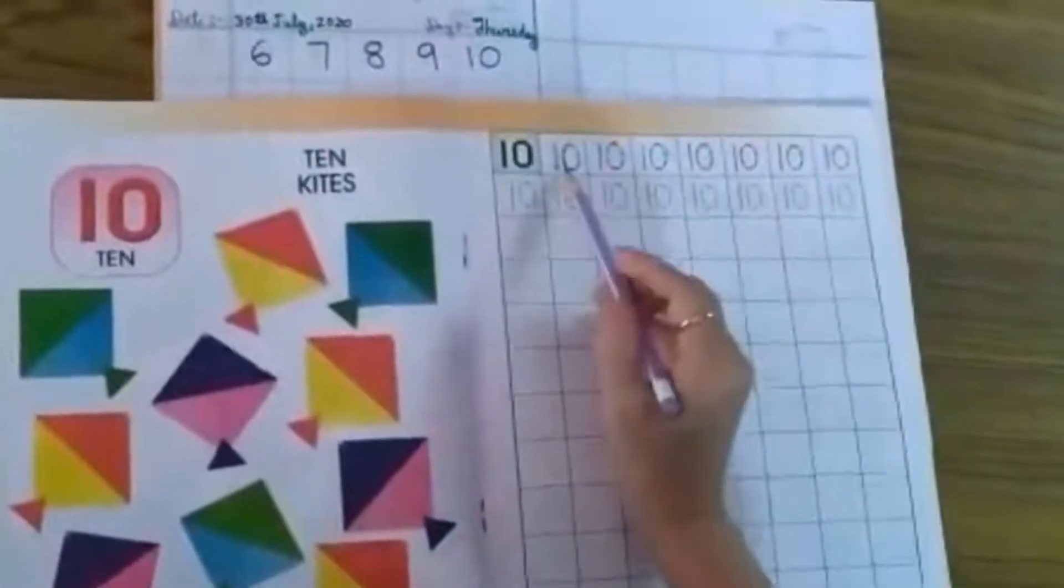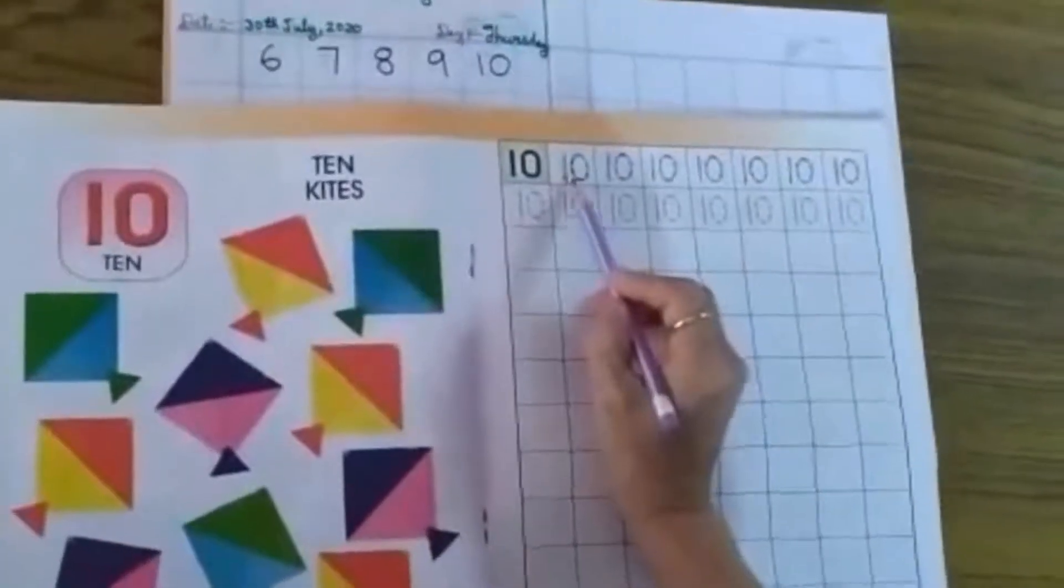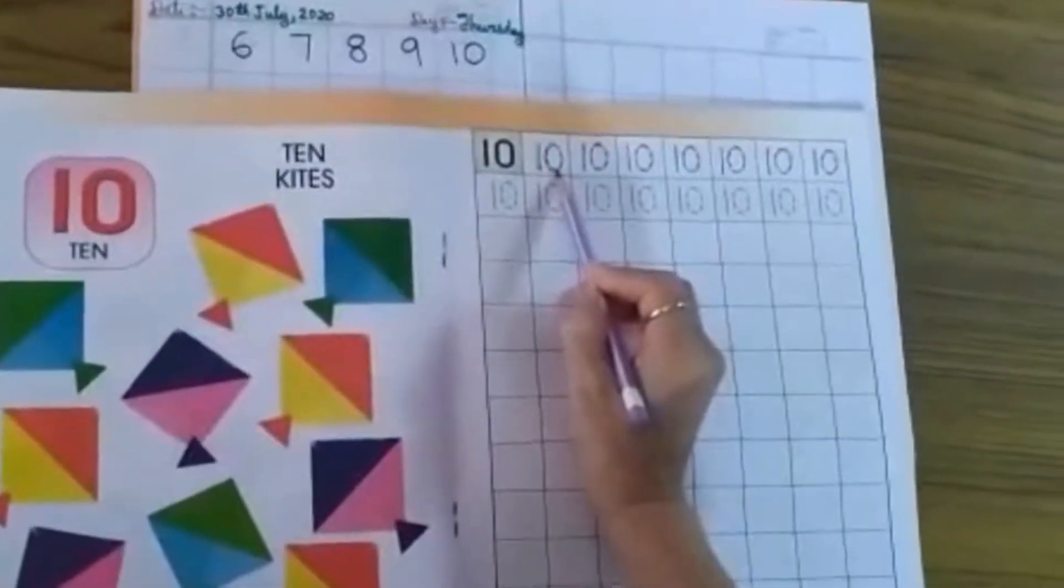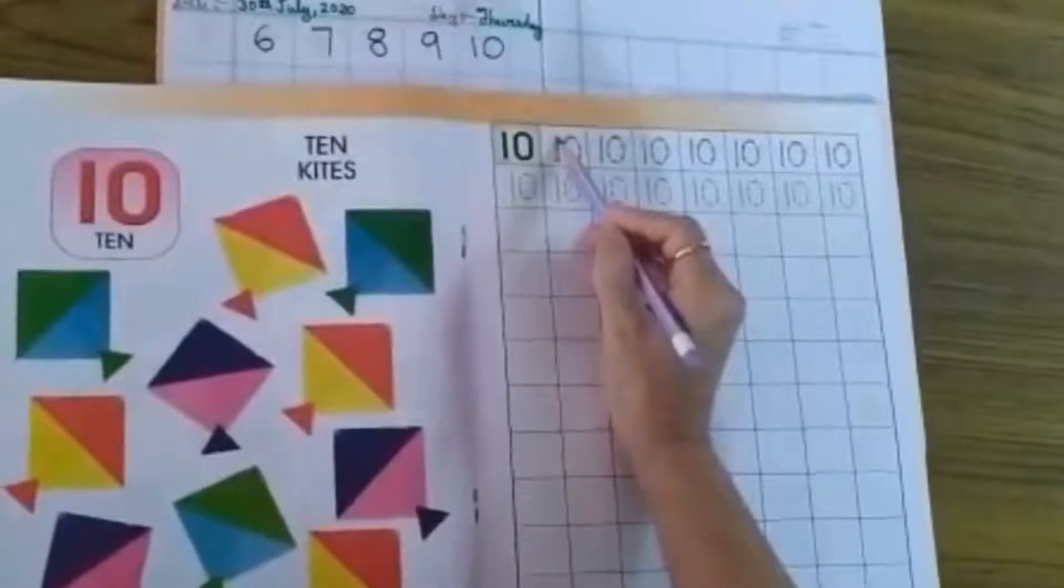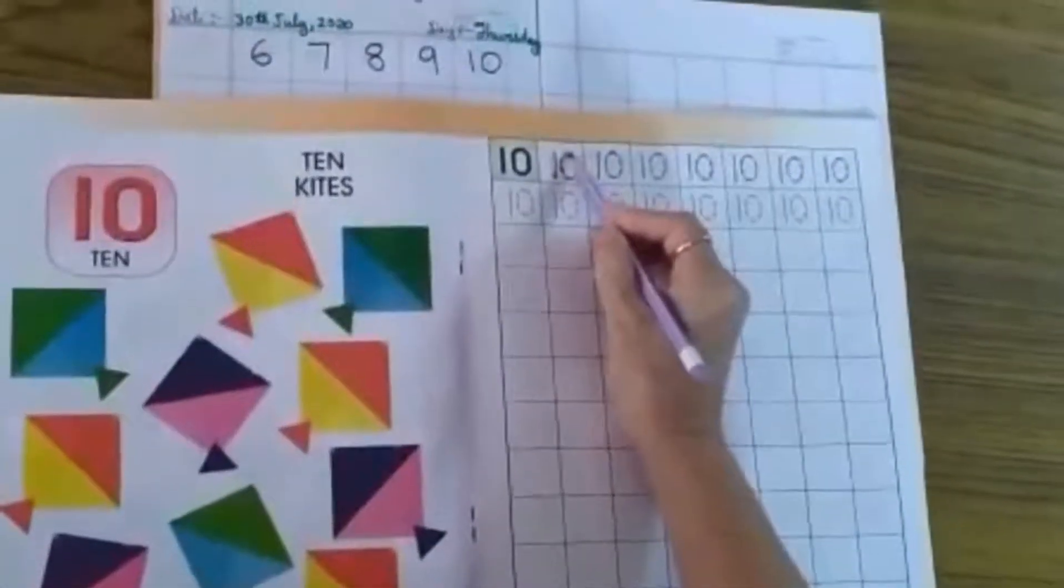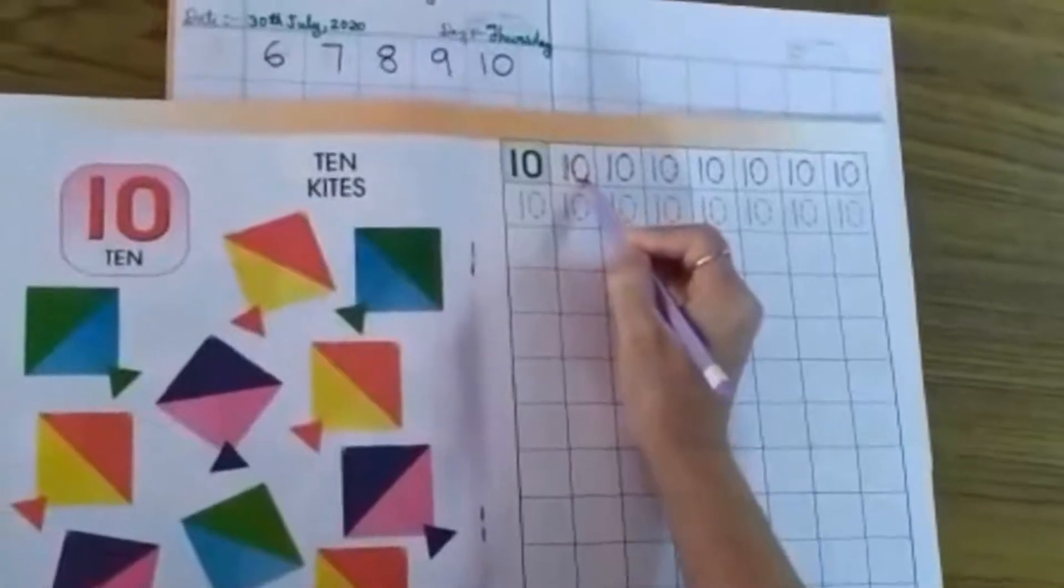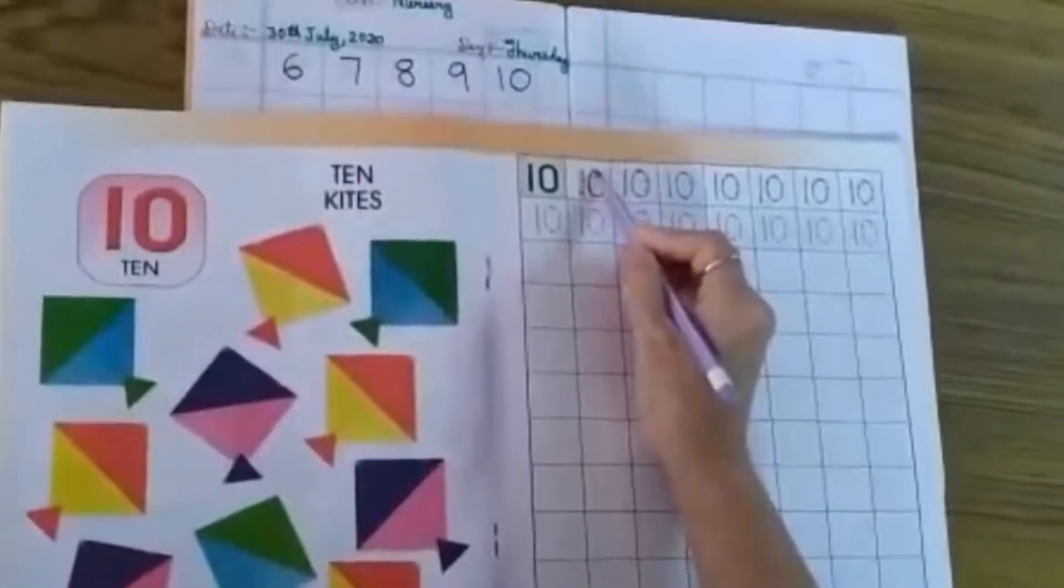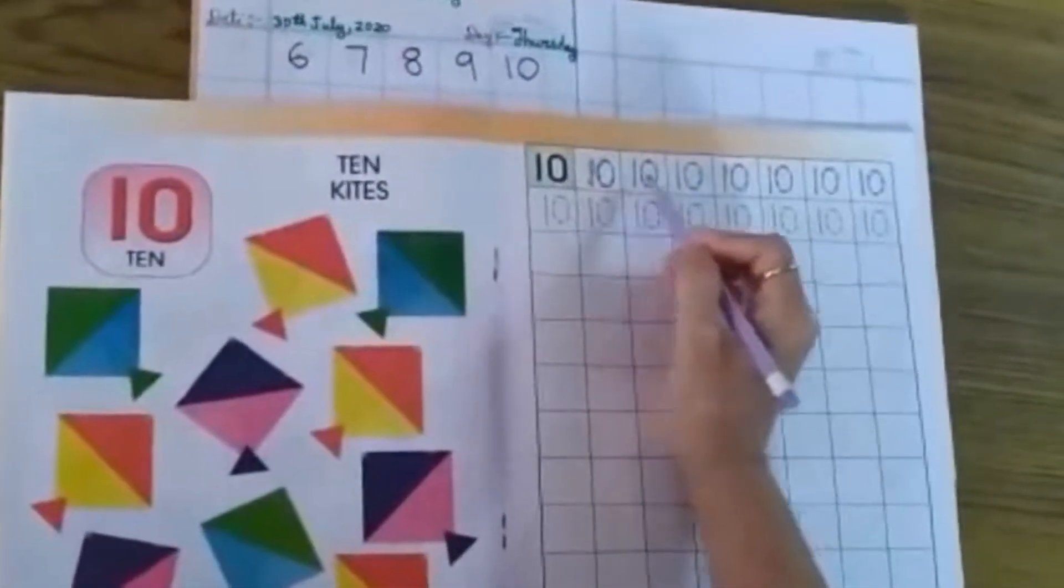Now here 1, 0, 10. First you write 1. 1, 0, 10.